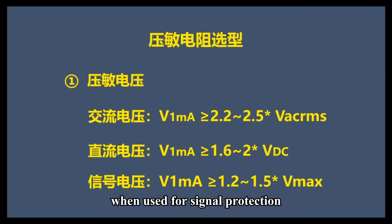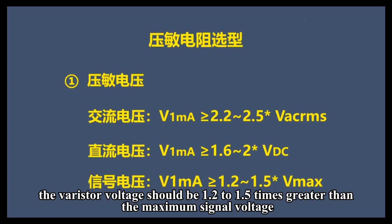When used for signal protection, the varistor voltage should be 1.2 to 1.5 times greater than the maximum signal voltage.